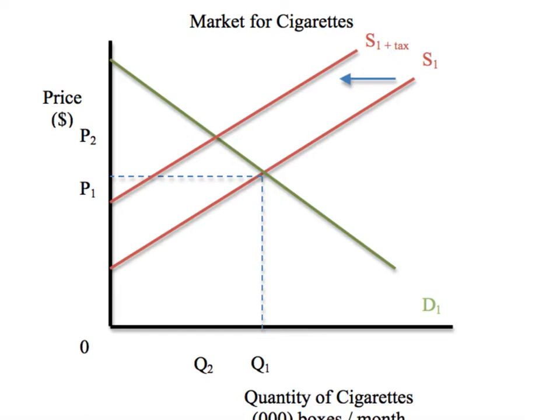The indirect tax of $1 on each pack of cigarettes — let's say they're trying to build a fund for education programs — shifts supply inward by the amount of the tax. But as you can see, producers won't be able to pass all of the tax on to consumers. We know this because at the higher price level, only a smaller quantity Q3 would be sold in the marketplace.